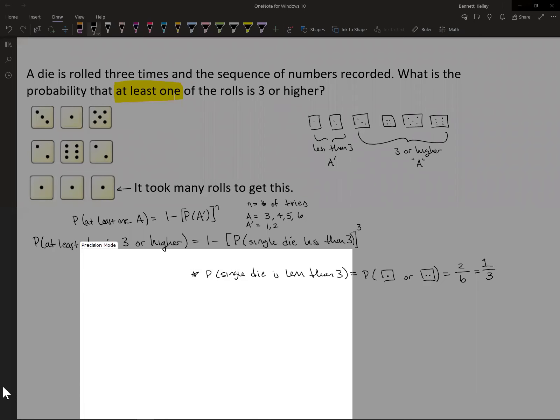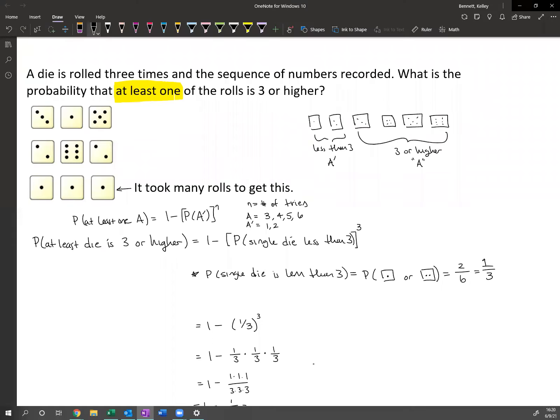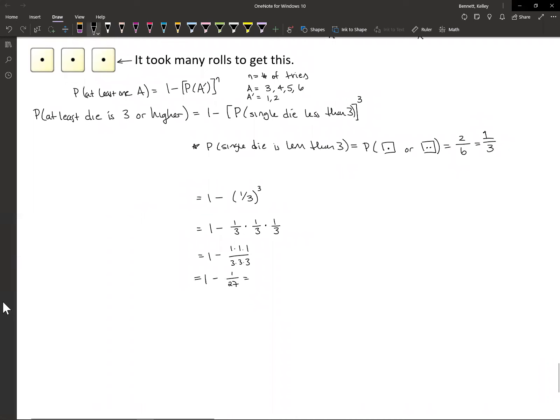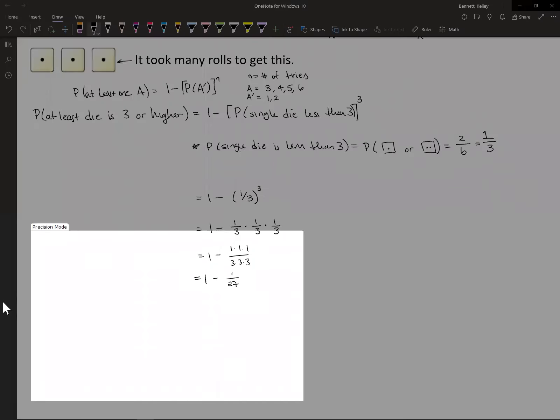Let's go ahead and crunch this out. This is going to be one minus one-third cubed. So this is the same thing as one minus one-third times one-third times one-third. To multiply these fractions, it's one minus one times one times one over three times three times three. Why am I taking the long way? Because I can and I enjoy it. One over 27.